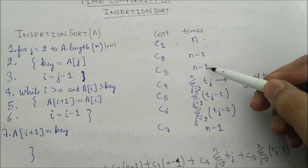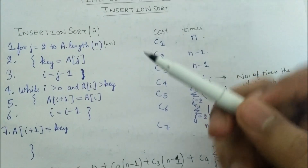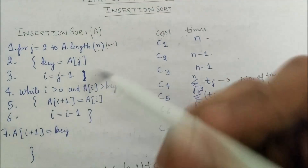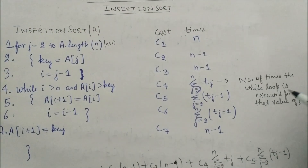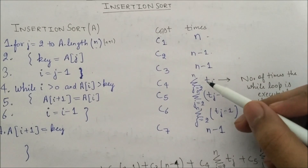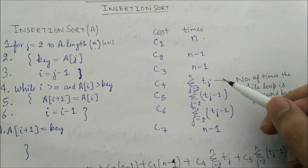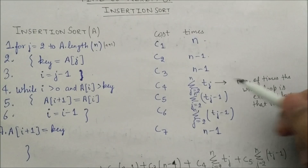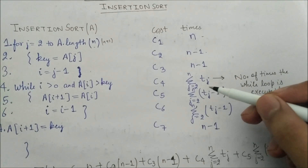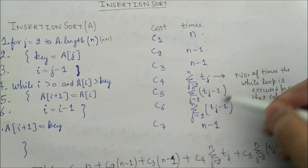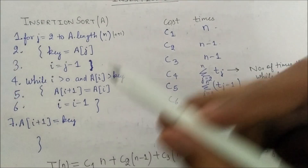The while-loop condition line depends on the value of j. We denote tj as the number of times the while loop executes for a particular value of j. So this line executes t2 when j=2, t3 when j=3, and so on — giving a total of Σ(j=2 to n) tj. The lines inside the while loop execute one fewer time, so they run Σ(j=2 to n) (tj − 1).